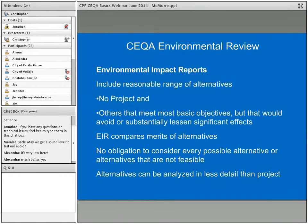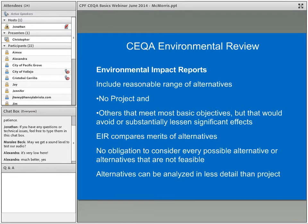EIRs, unlike mitigated negative declarations, include a reasonable range of alternatives. There's a no-project alternative and others that meet the most basic objectives while avoiding or substantially lessening significant impacts. EIRs compare the merits of alternatives, but there's no obligation to consider every possible alternative or ones considered not feasible. Alternatives can be analyzed in less detail than the main project.